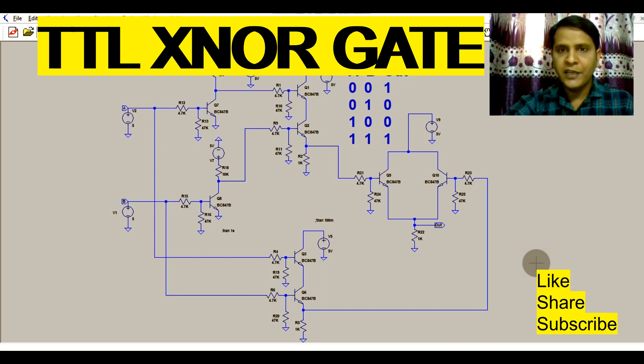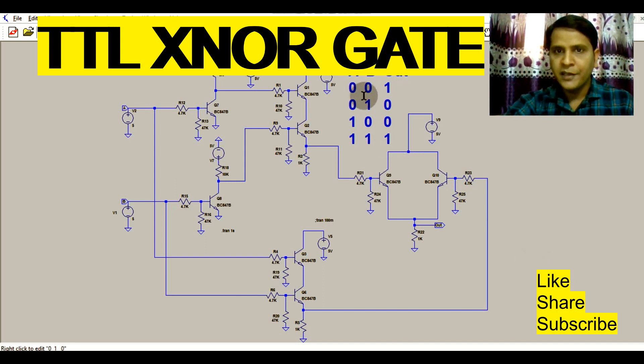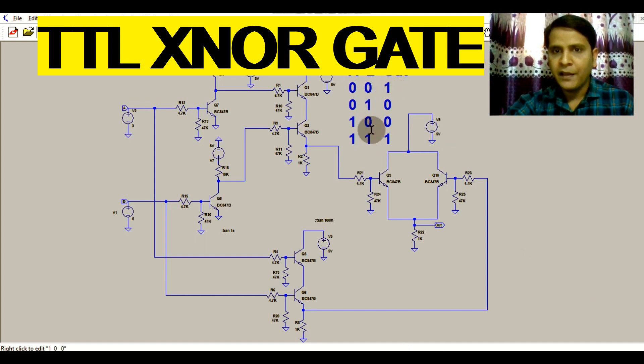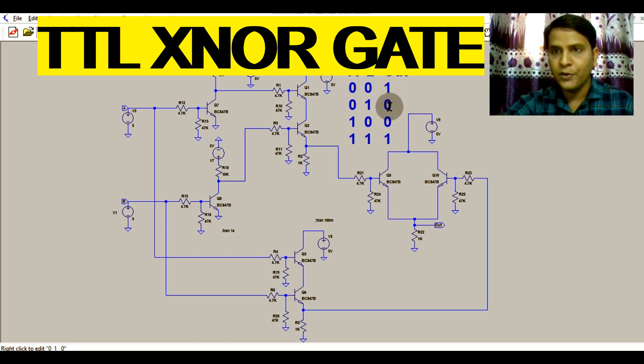So here you can see, if you remember the truth table of XNOR gate: if both inputs are low, your output is high, and if both inputs are high, your output is high, and if either one input is low, your output is low.